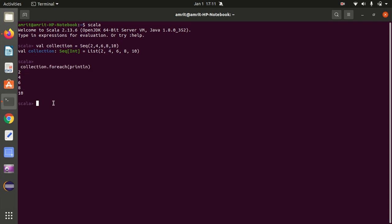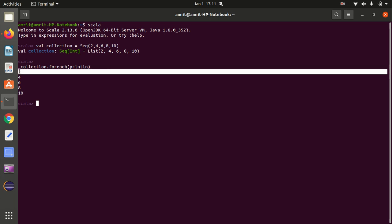So what is happening here is that foreach is traversing over the collection. It first goes to the first element of the collection that is 2 and applies the println method on it. Then this results in a printing of 2 here.